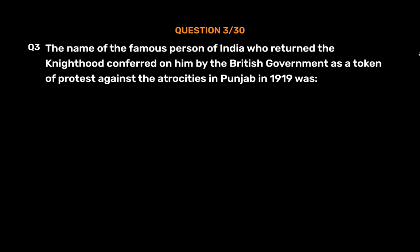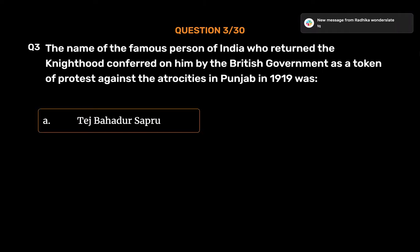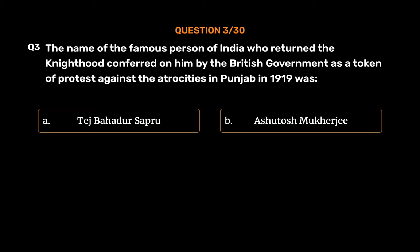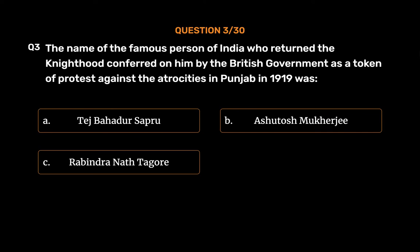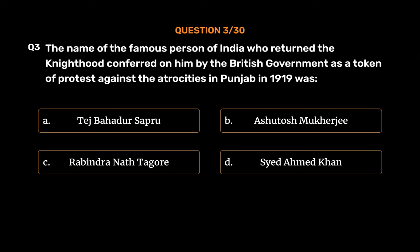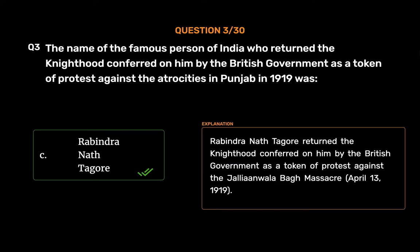Question No. 3. The name of the famous person of India who returned the knighthood conferred on him by the British government as a token of protest against the Jallianwala Bagh massacre. The correct answer is Option C. Rabindranath Tagore returned the knighthood conferred on him by the British government as a token of protest against the Jallianwala Bagh massacre, April 13, 1919.